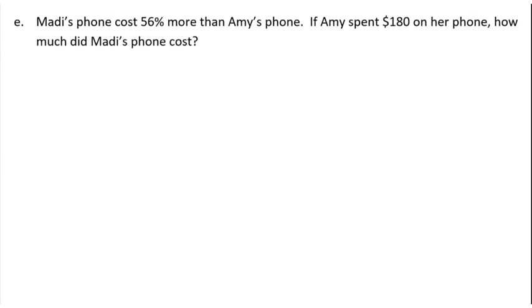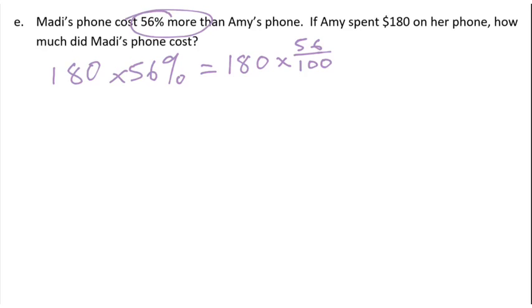Let's have a look at E here. So Maddie's phone costs 56% more than Amy's phone. If Amy spent $180, let's find out how much is 56% of $180. So I can write that as 180 times 56 over 100, turn it into a fraction. Now that's going to be the same as 180 times 56 all divided by 100. So before I multiply all these big numbers, let's just do a bit of simplifying. So 180 over 100, I can divide that both by 10. That will take me down to 18 over 10. Now can I divide any further? Well yes, I could still divide top and bottom by 2. So if I do 18 divided by 2, that would give me 9. 10 divided by 2 is 5. So that's the same as 9 times 56 all divided by 5.